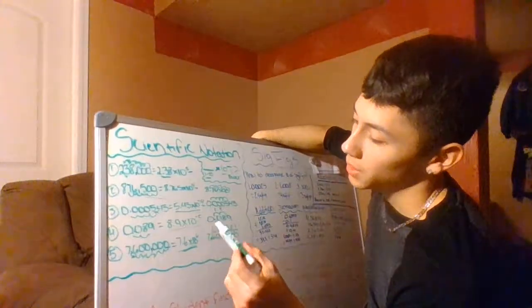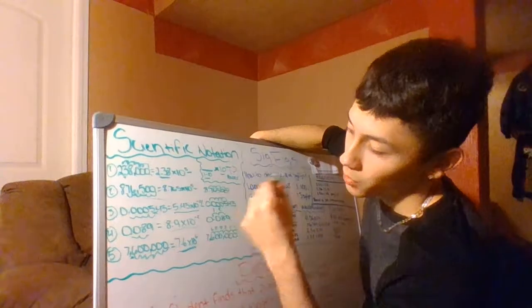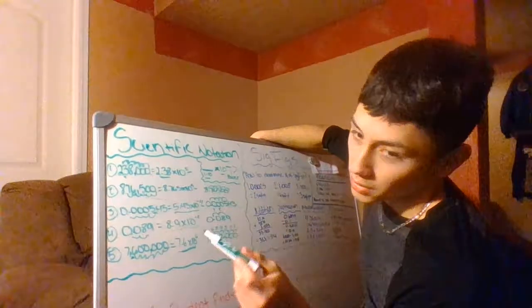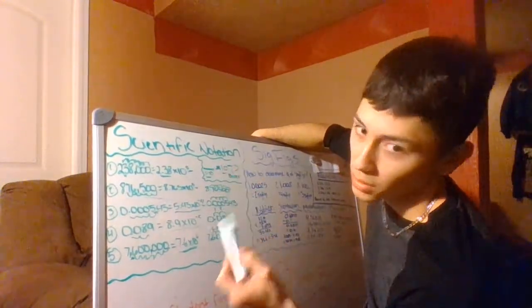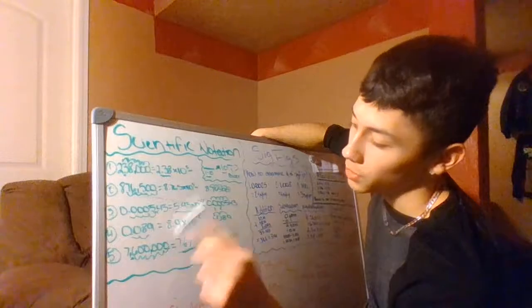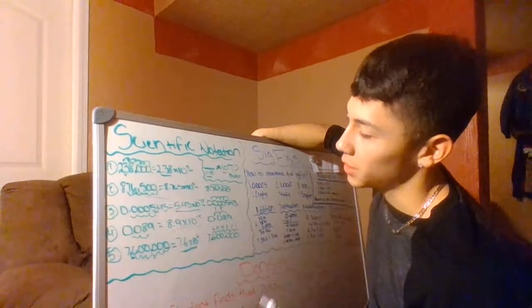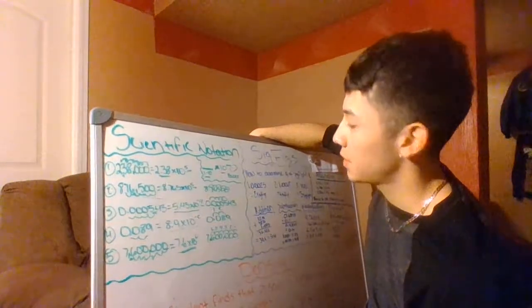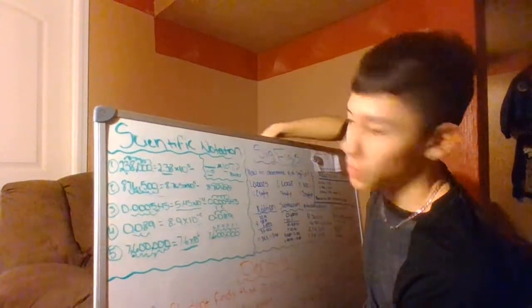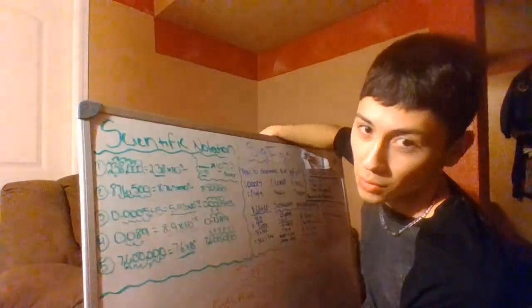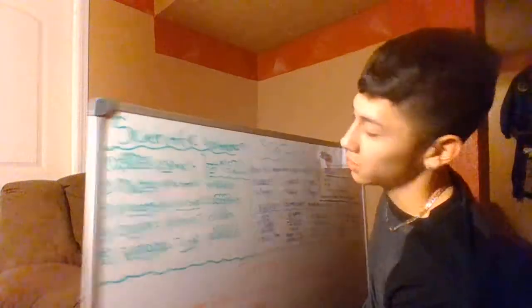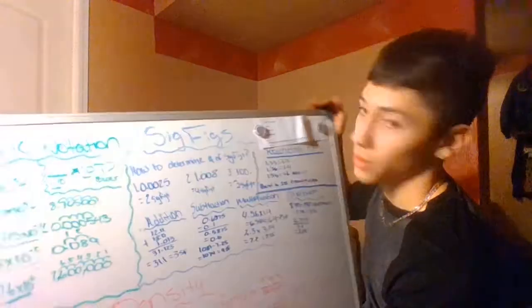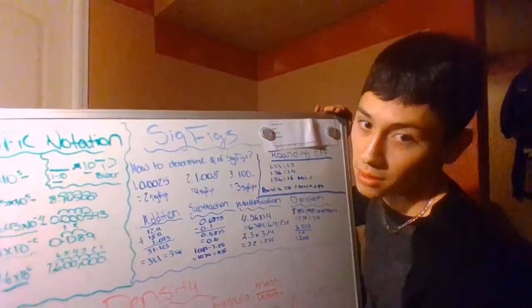A key thing to remember: whenever you're moving to the left, your exponent is going to be positive; whenever you move to the right, it's going to be negative.